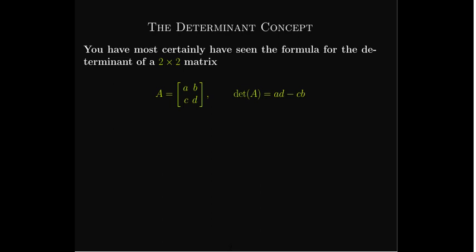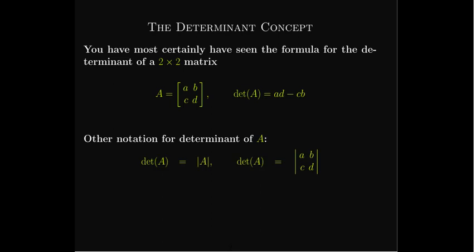We've certainly seen AD minus CB in the formula for the inverse of a 2×2 matrix. There are other ways to write the determinant besides just writing DET. You could use absolute value signs around the letter representing the matrix, or write the entries of the matrix between straight lines. Since these are straight lines rather than brackets or parentheses, it is a determinant.